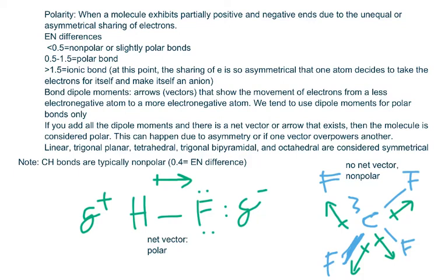Hi everybody. In this video, we are going to talk about a concept known as polarity. Polarity occurs when a molecule exhibits partially positive and negative ends due to the unequal or asymmetrical sharing of electrons. Polarity is caused by electronegativity differences, and this is what causes one atom of a bond to have more electrons than another, which results in an asymmetrical sharing of electrons.